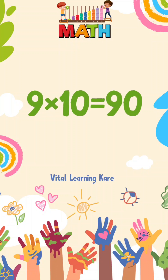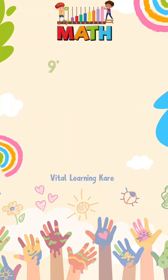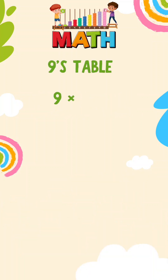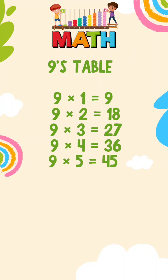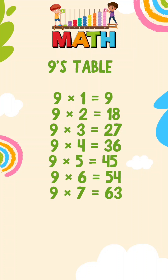Let's quickly revise. 9 1's are 9. 9 2's are 18. 9 3's are 27. 9 4's are 36. 9 5's are 45. 9 6's are 54. 9 7's are 63.